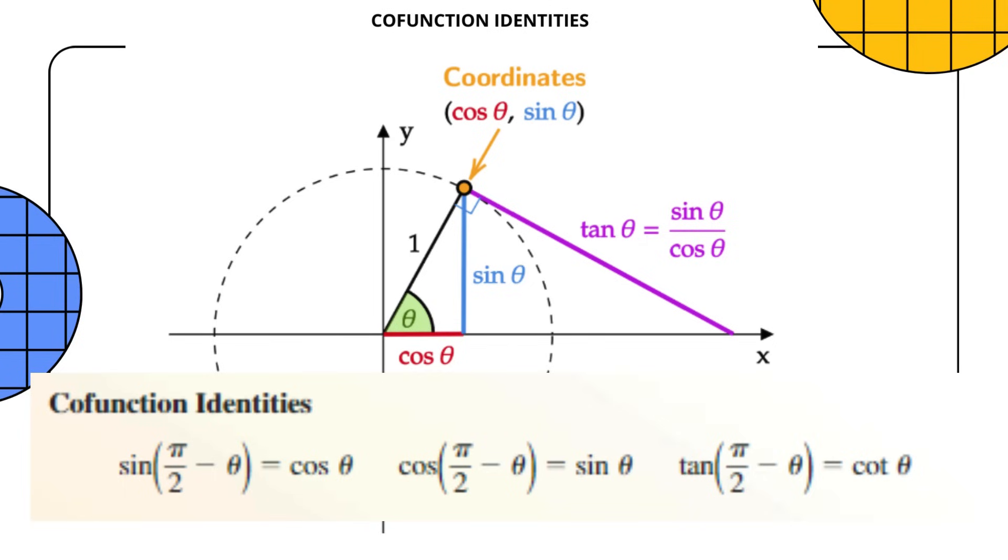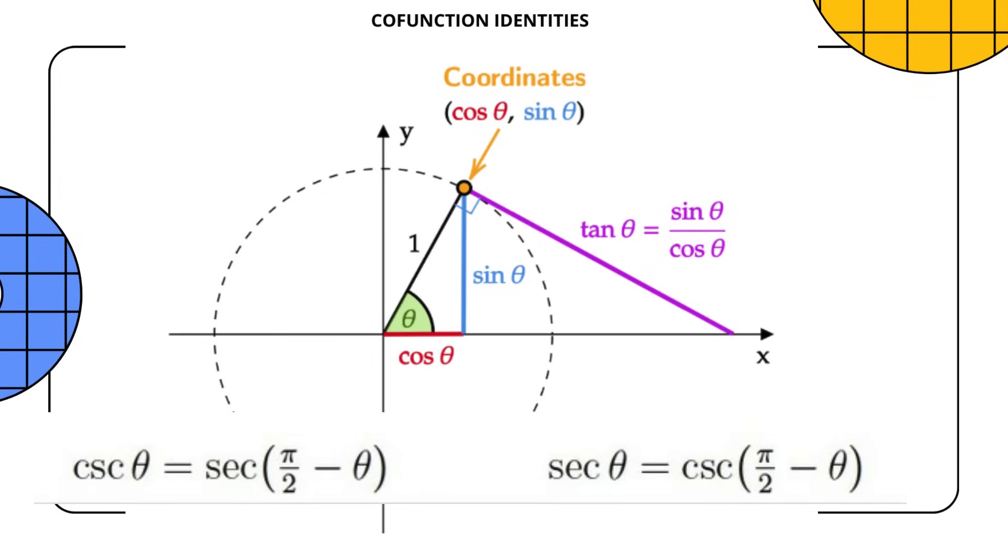Similarly, tan and cot functions are complementary to each other, hence tan(π/2 - θ) = cot θ. Secant and cosecant functions are complementary to each other, hence sec(π/2 - θ) = csc θ, and csc(π/2 - θ) = sec θ.